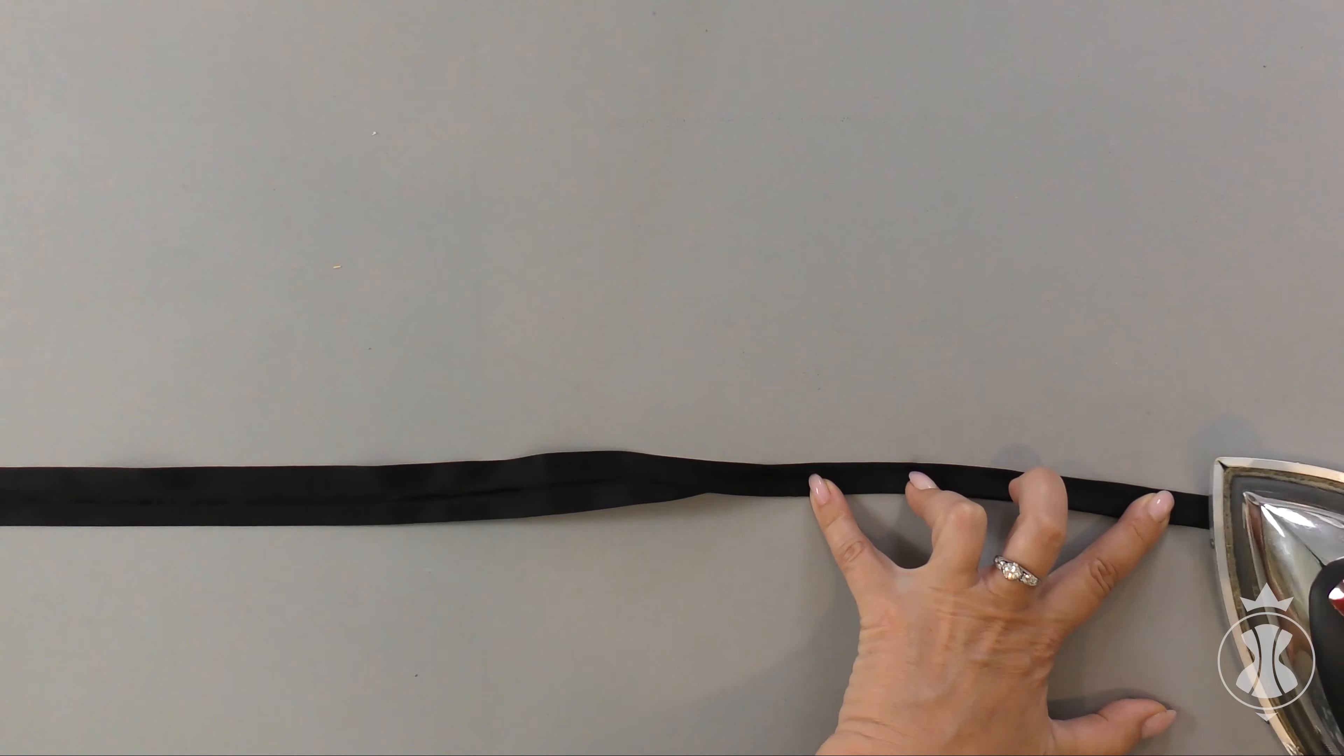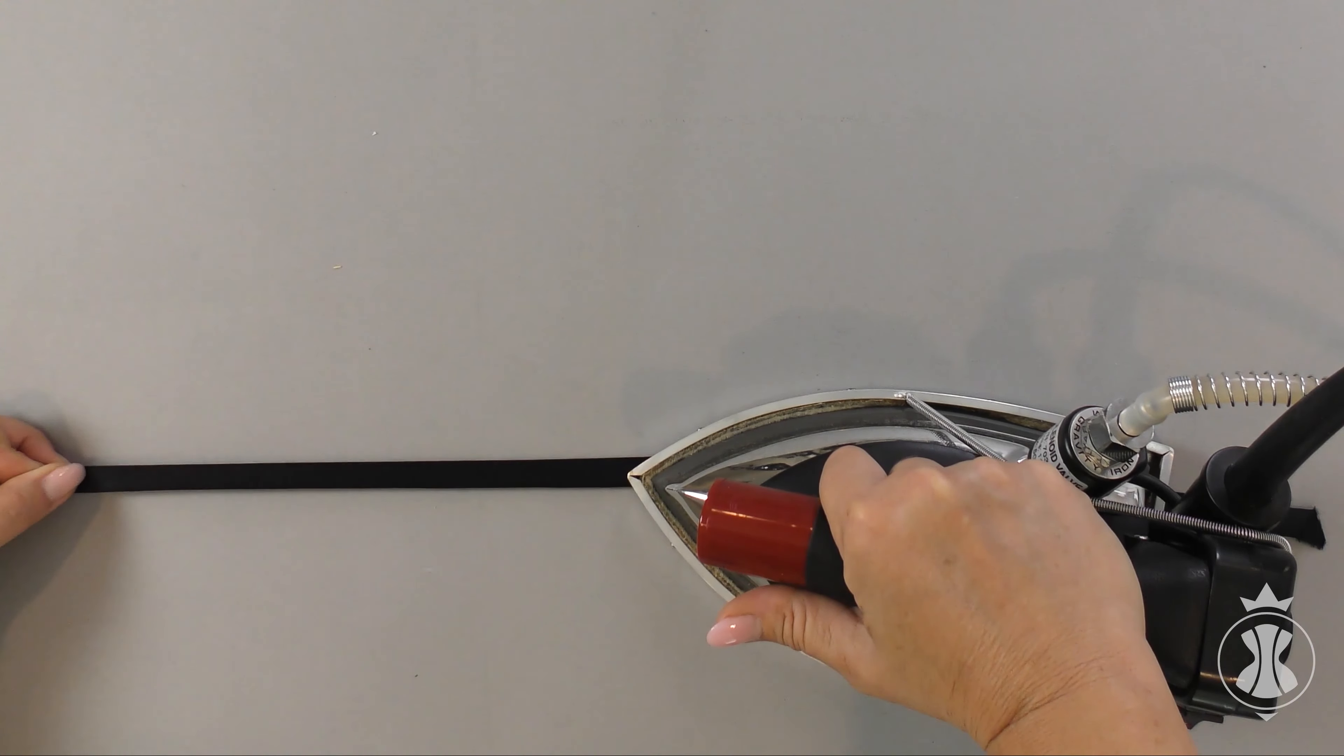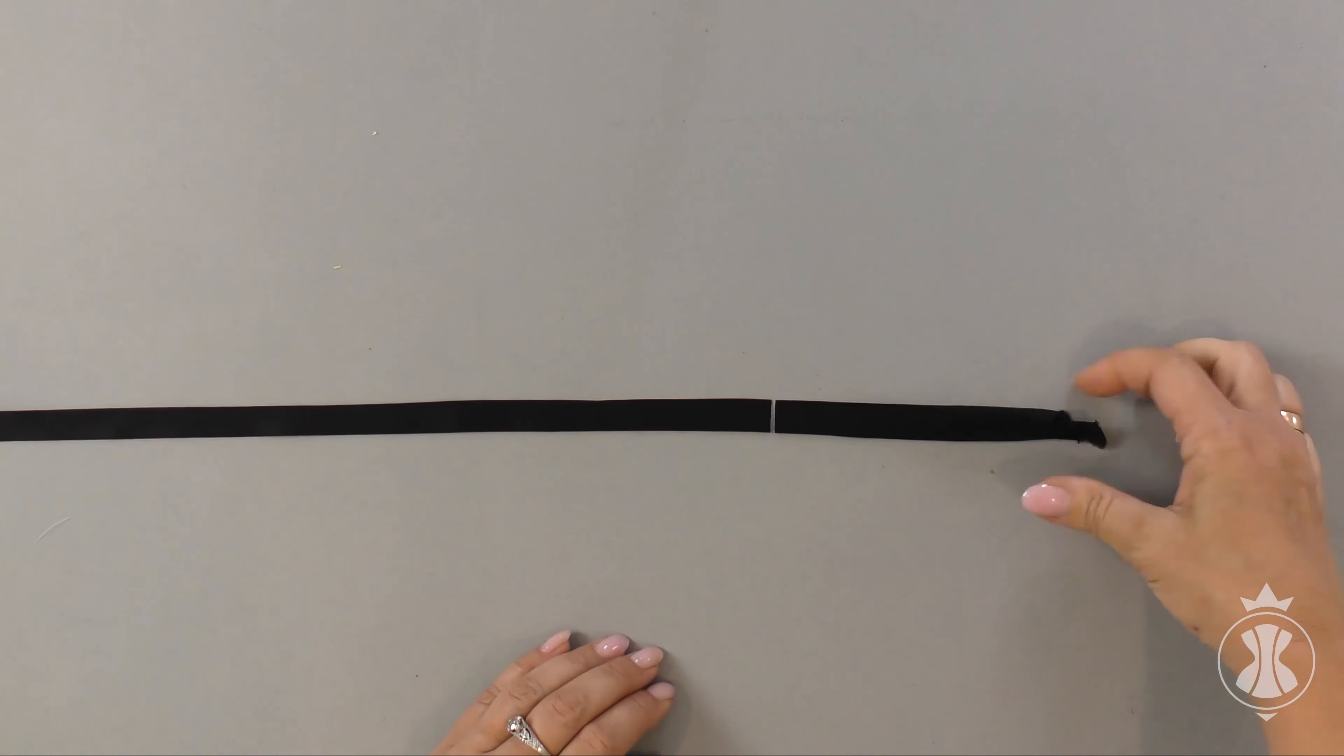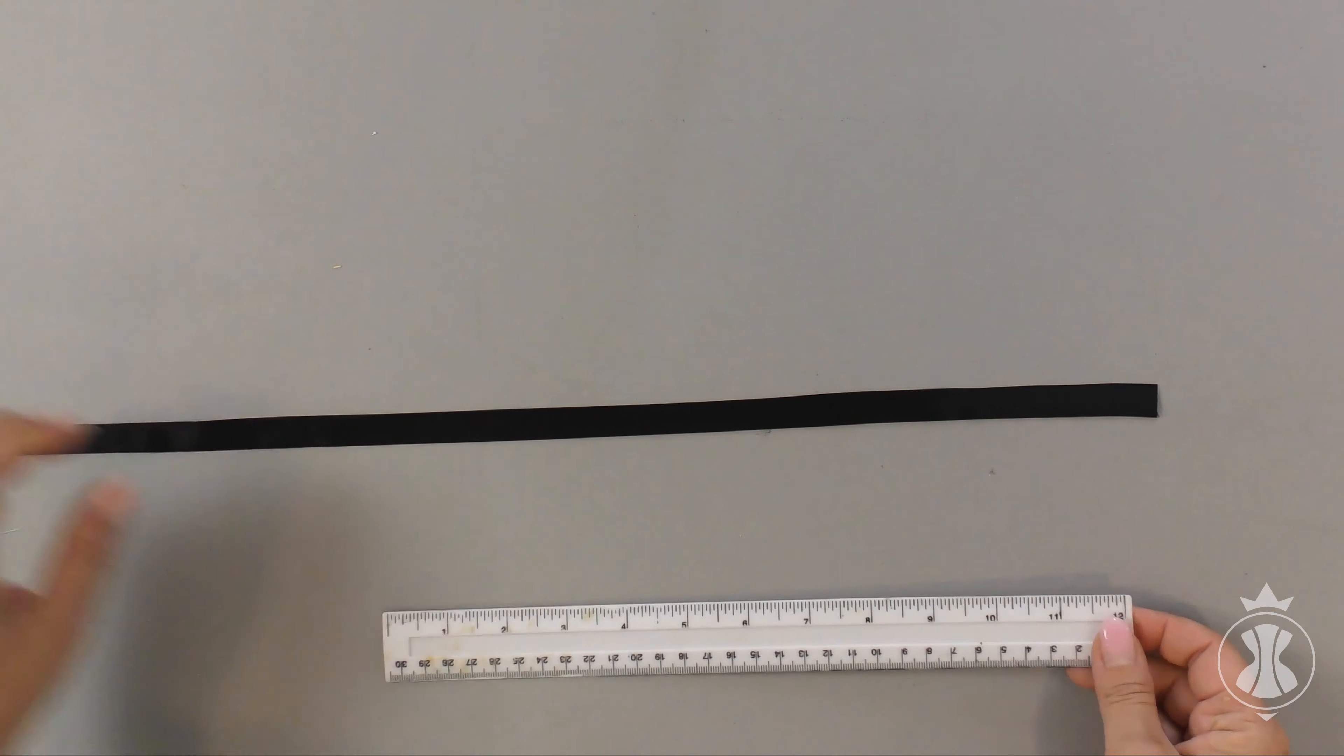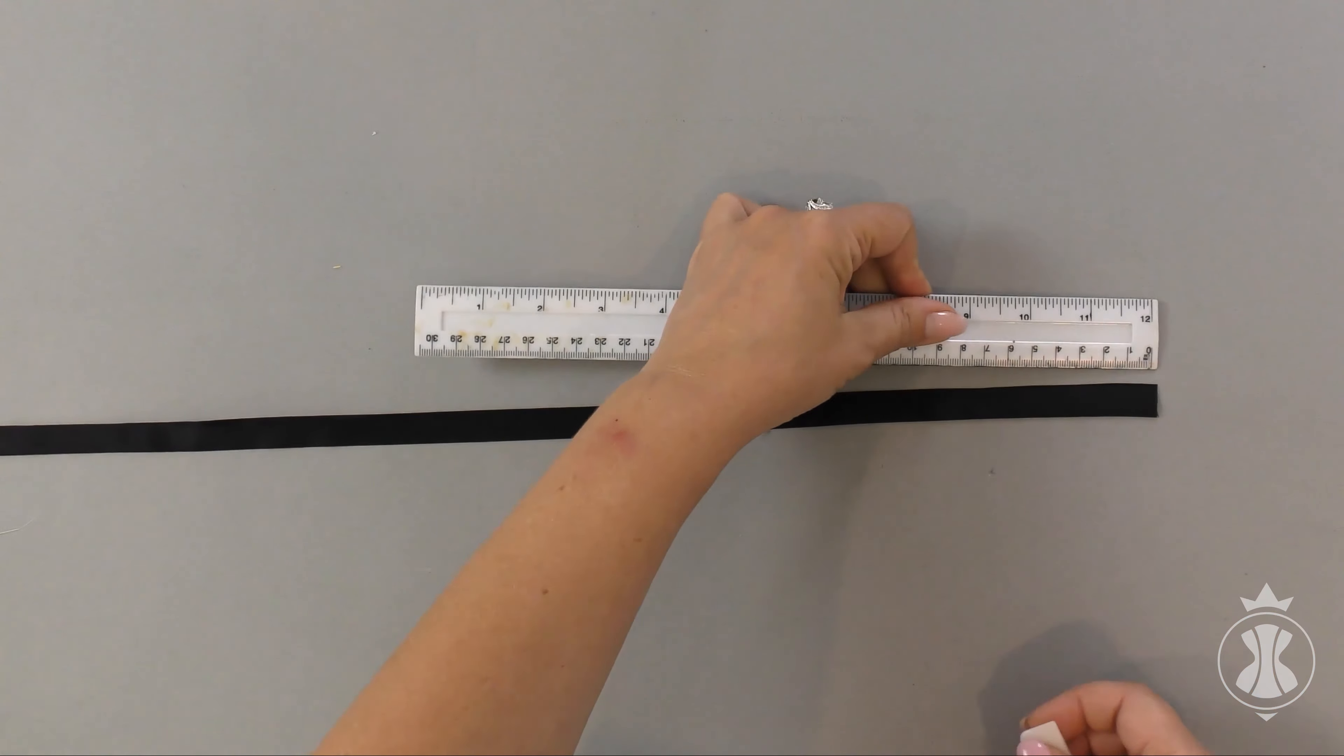Now we need to iron this tape in half. I cut off the unnecessary end and mark the length of the tape. I leave 2 cm of the auxiliary tip just in case.